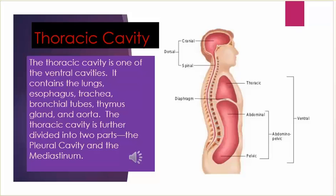Thoracic cavity: the thoracic cavity is one of the ventral cavities. It contains the lungs, esophagus, trachea, bronchial tubes, thymus gland, and aorta. The thoracic cavity is further divided into two parts: the pleural cavity and the mediastinum.